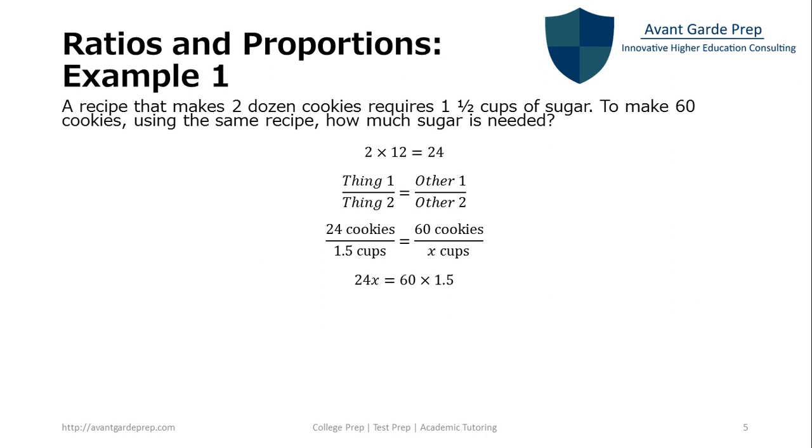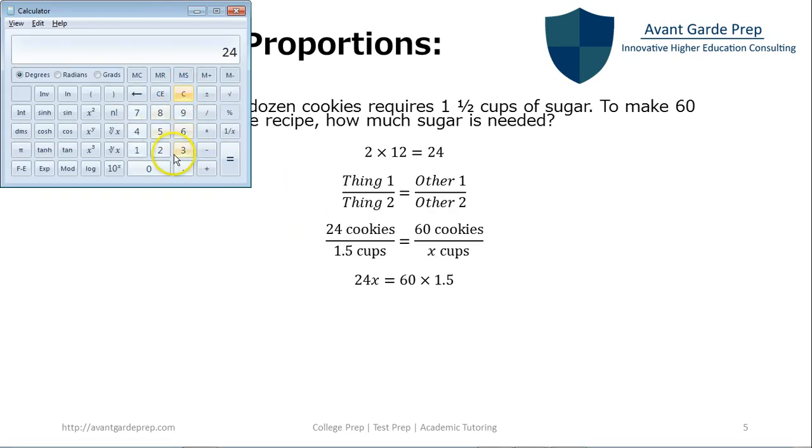Now we need to cross multiply and divide. We'll go ahead and do that. So we have sixty times one point five. And that's going to equal ninety. And then we're going to divide that by twenty-four. And that gives us three point seven five.